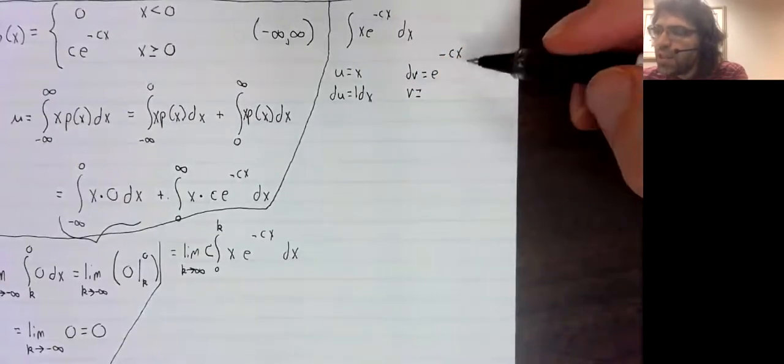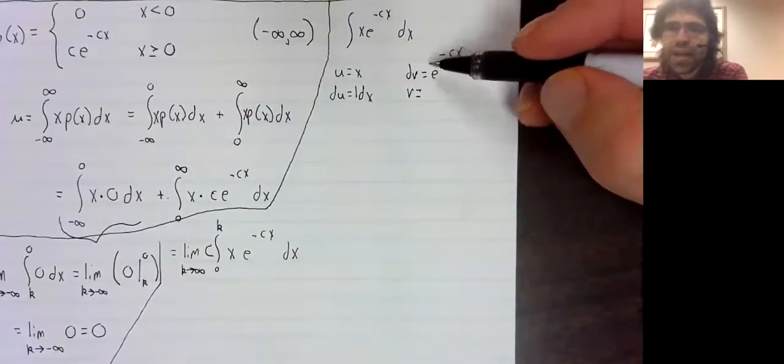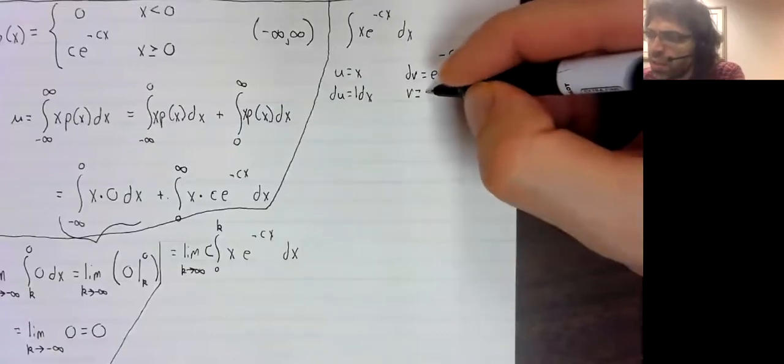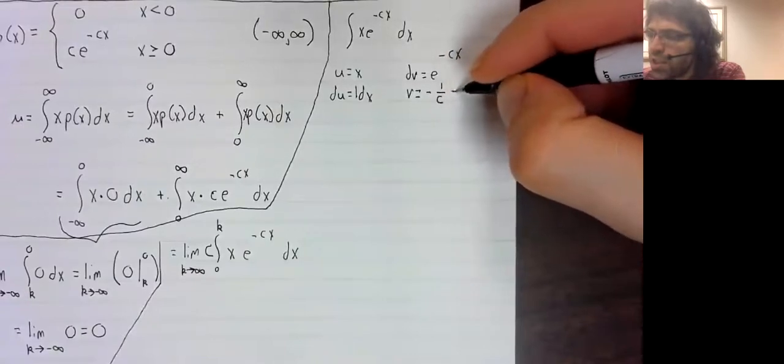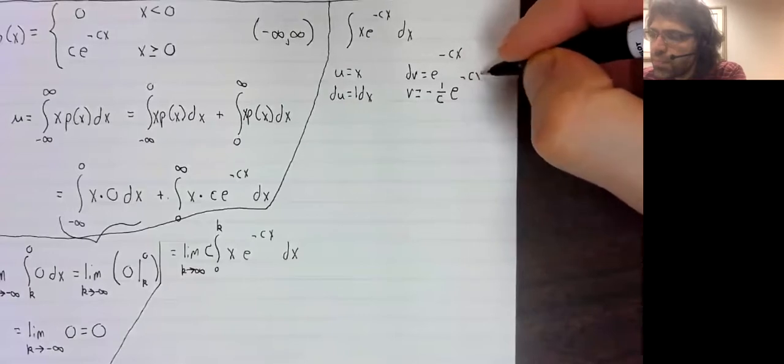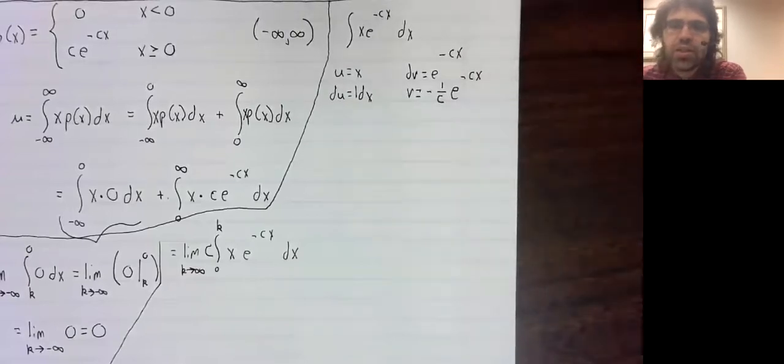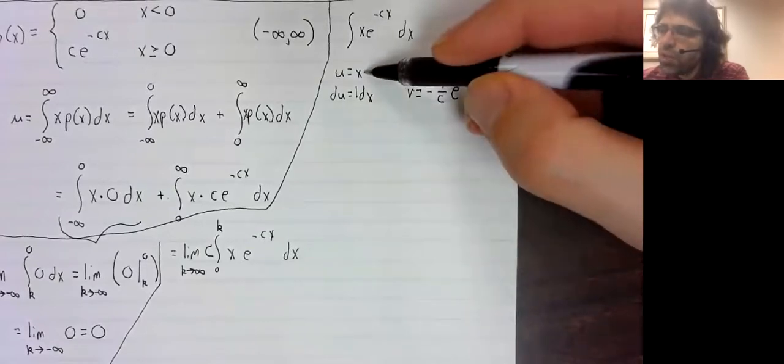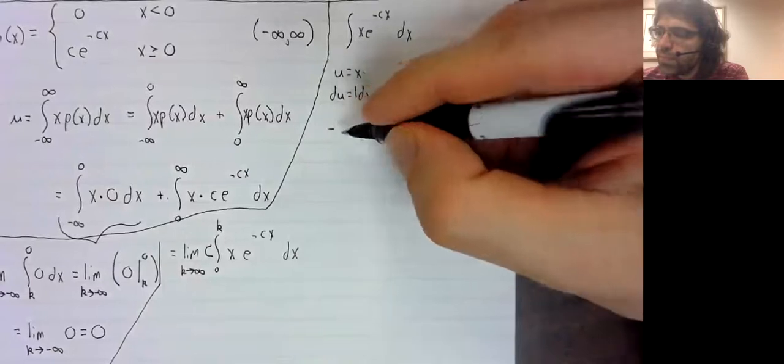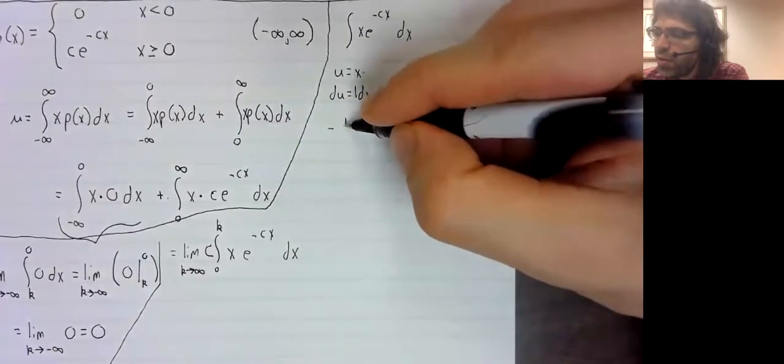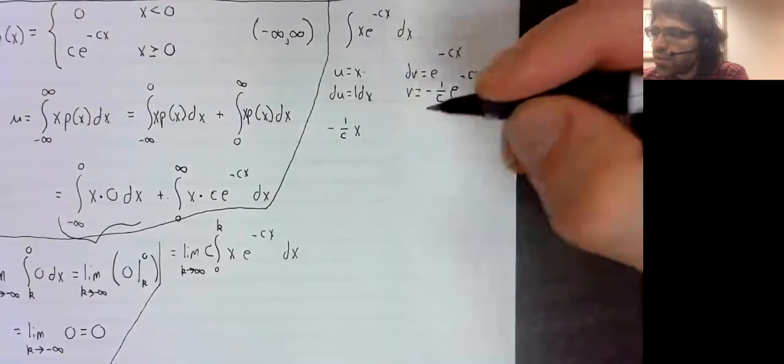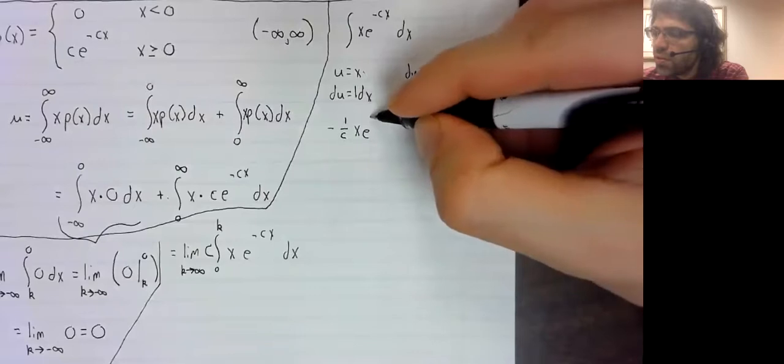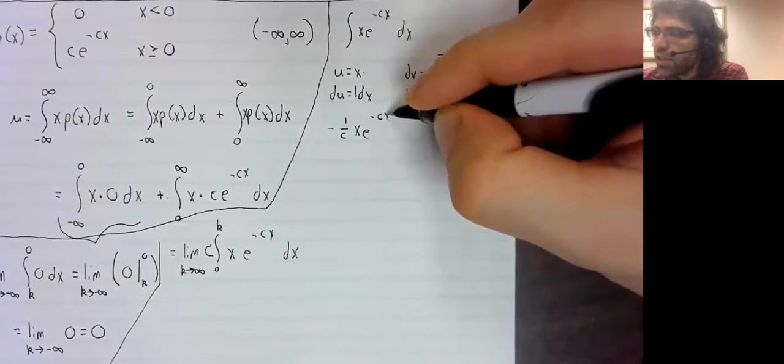and v is the antiderivative of dv. So negative 1 over c, e to the negative cx. u times v is negative 1 over c, x, e to the negative cx.